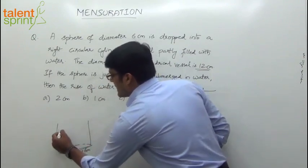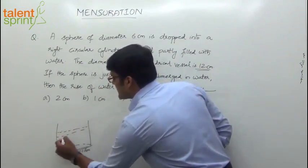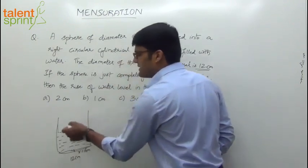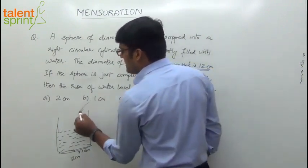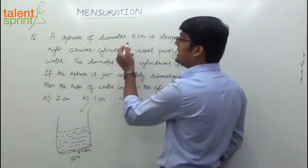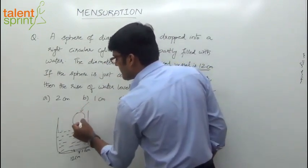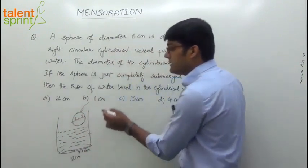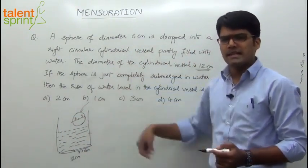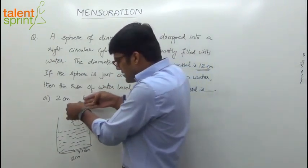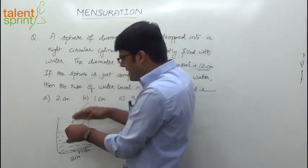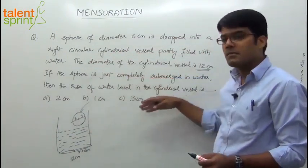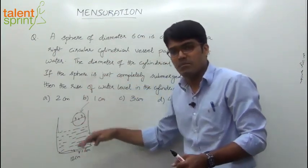This vessel is partly filled with water up to a certain level, but there is still some space left in the vessel. Now we are dropping a sphere of diameter 6 cm. So there is a sphere of diameter 6 cm — diameter is 6, which implies radius is 3. This sphere is dropped into that cylinder. When the sphere is dropped in, it just submerges — the sphere is just completely submerged, not floating.